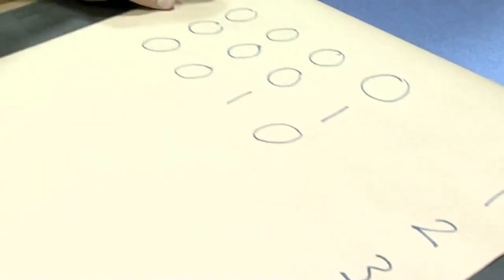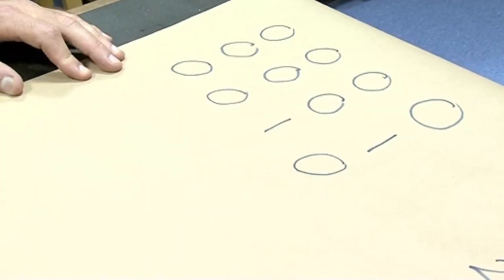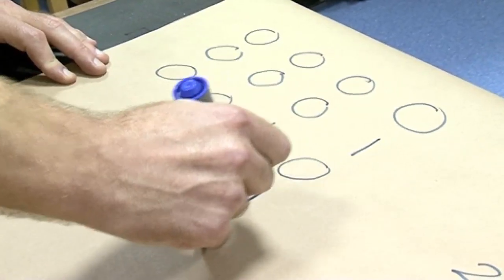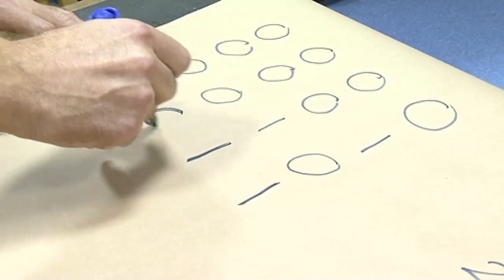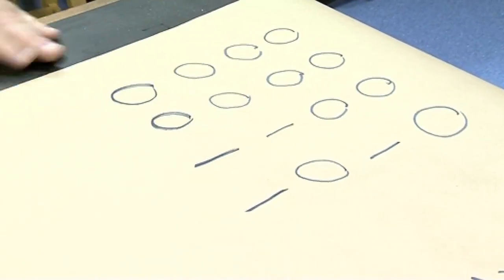So for number 3, what we're going to do is add 1 to the 2. So 0 plus 1 is 1. This column remains unchanged. And these columns remain unchanged.